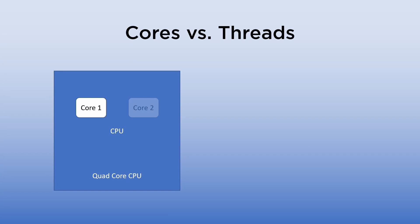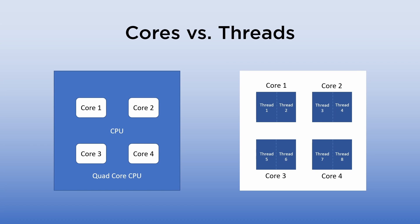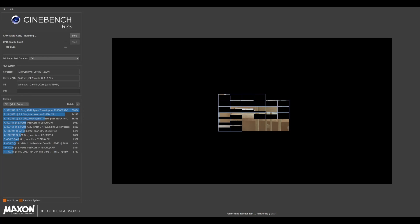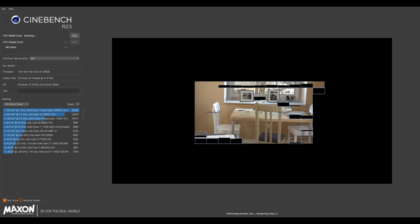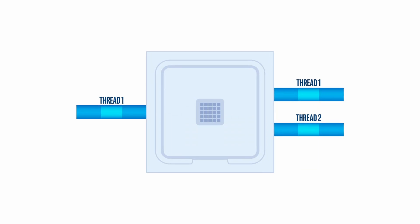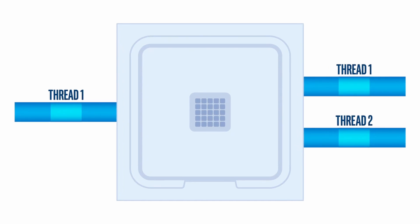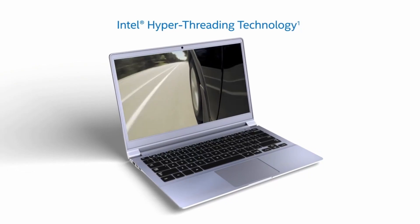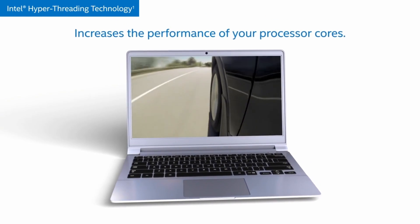In every CPU, there are cores and threads. A processing core is a processing unit that reads instructions to perform specific actions; having multiple cores usually means it can perform multiple tasks simultaneously. Threads are a virtual version of a CPU core, utilized by Intel's hyper-threading technology, which basically breaks up physical cores into virtual cores to increase performance.